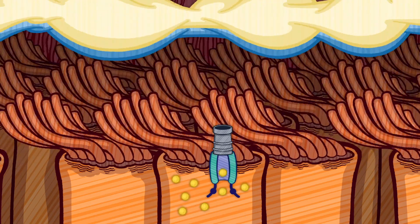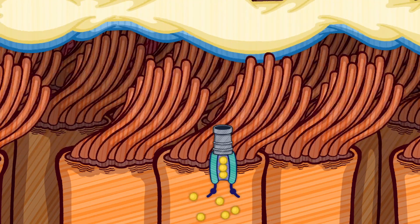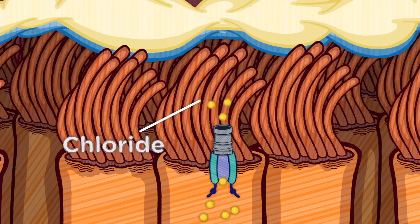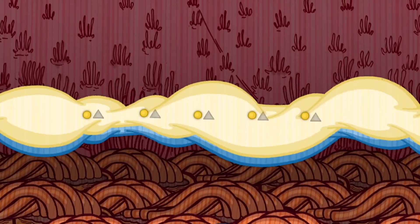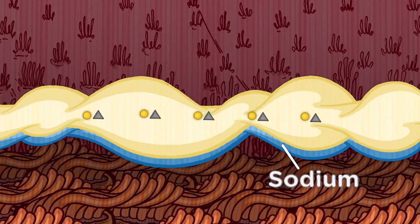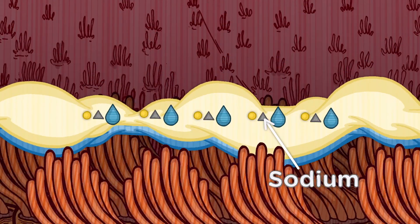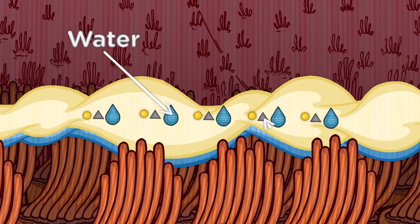lines the apical membrane of epithelial cells and transports chloride into ASL. Chloride and sodium in ASL attract water.